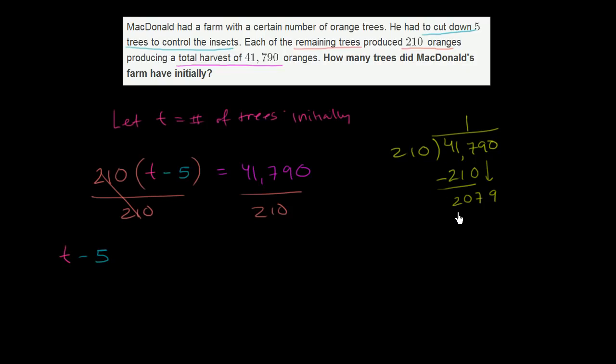How many times does 210 go into 2,079? It looks like it would go into it not quite 10 times. It looks like it would go into it 9 times. 9 times 210 is going to be 9 times 0 is 0, 9 times 1 is 9, 9 times 2 is 18. And then we subtract again. 9 minus 0 is 9. We have to regroup from the thousands place.